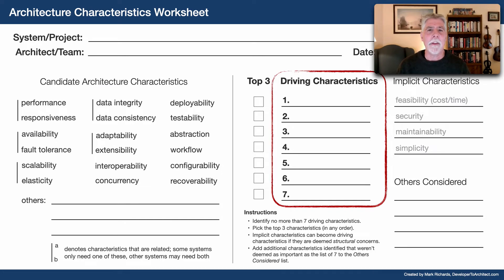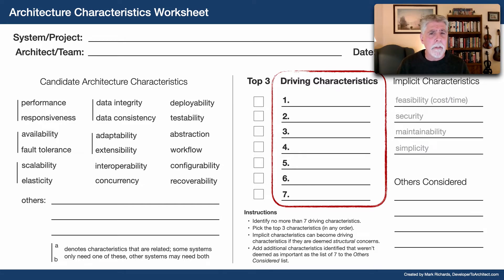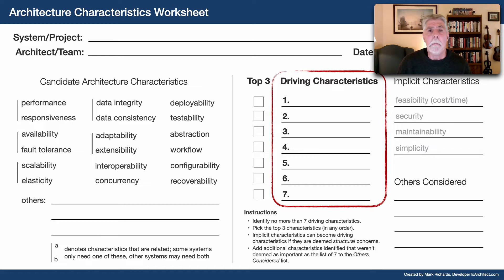The main section contains the seven driving characteristics. I only provide seven slots in the worksheet — this is my personal number. I like to keep the number of architecture characteristics on any given system to no more than seven. Too few, and the architecture won't support the business needs. Too many, and you'll never find an architecture to support all those characteristics — there are too many trade-offs. In my 26-plus years as a software architect, seven has proven to be the right upper limit. Some projects may only need five, so it's not necessary to fill all seven slots.